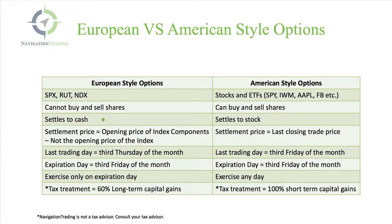European style options settle to cash. When they expire, if you're holding options in those positions, they simply settle to cash, whereas the American style options settle to that actual stock that you own. The settlement price equals the opening price of the index components, not the opening price of the index — I'll get into this in a later video. The settlement price of the American style options simply settles to the last closing trade price on expiration day.